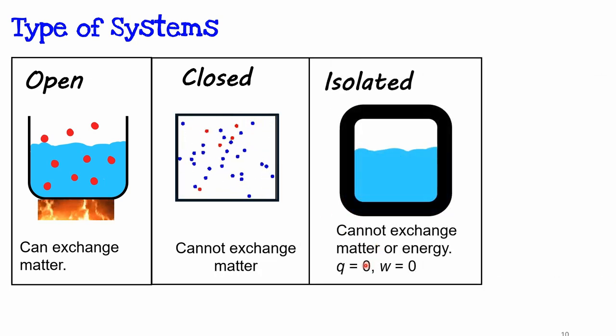An isolated system cannot exchange matter or energy. So its mass and its total energy is constant over time. I have this Q here. Q means energy transferred as heat and W stands for energy transferred as work.